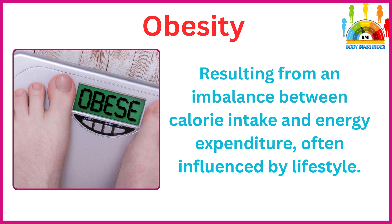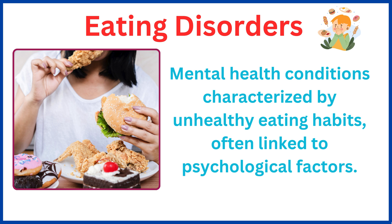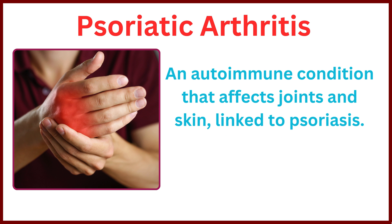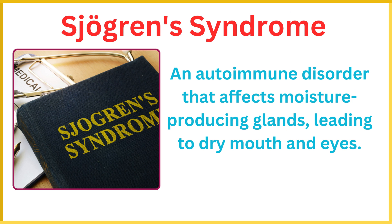Obesity results from an imbalance between calorie intake and energy expenditure, often influenced by lifestyle. Eating disorders are mental health conditions characterized by unhealthy eating habits, often linked to psychological factors. Psoriatic arthritis is an autoimmune condition that affects joints and skin, linked to psoriasis. Sjogren's syndrome is an autoimmune disorder that affects moisture-producing glands, leading to dry mouth and eyes.